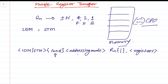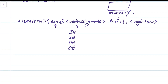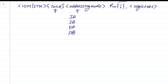The addressing mode is very crucial here. There are four different addressing modes for load/store multiple instructions: Increment After (IA), Increment Before (IB), Decrement After (DA), and Decrement Before (DB).